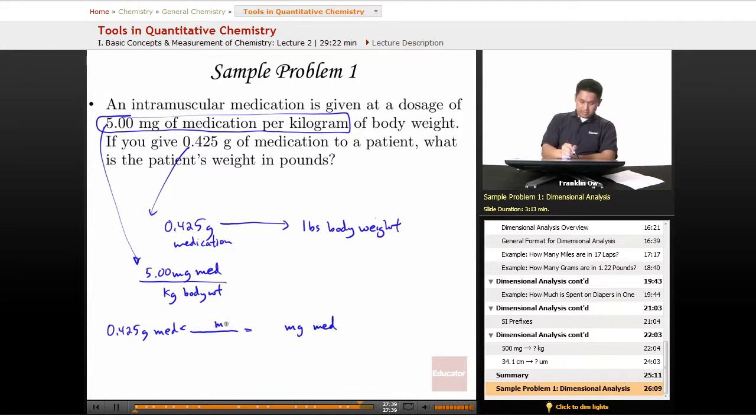Okay, so milligrams goes upstairs and grams goes downstairs. When we look up the prefix for milli, it's 10 to the negative 3. That goes with the prefix list unit on the bottom and then 1 on top. That's going to give us milligrams of medication, which is going to be 425.